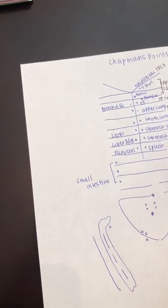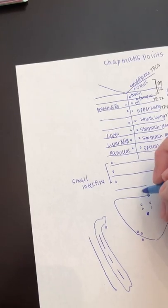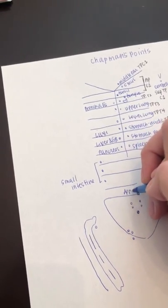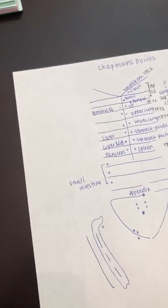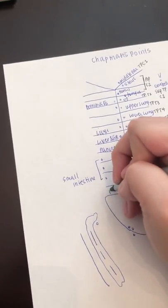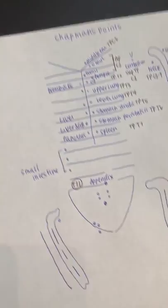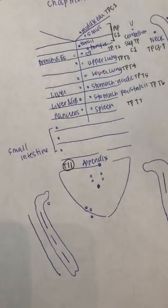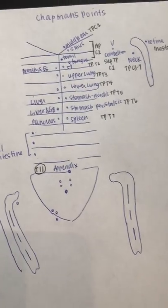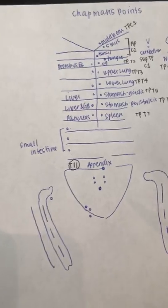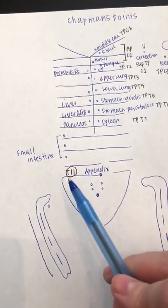And now on the tip of the twelfth rib on the right is the appendix. And the reason why they love this one so much is because its posterior point is T11. So that's one of the big ones here. So it doesn't follow the normal trend here of it matching. So it's the tip of the twelfth rib and T11.